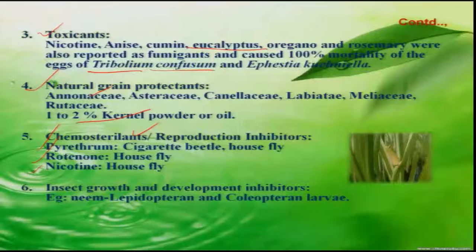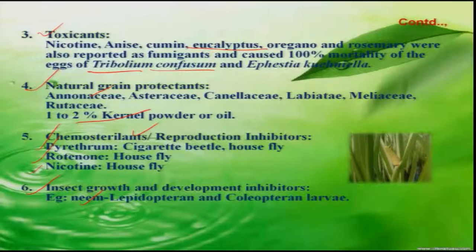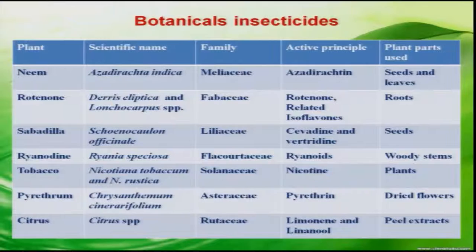The next group is insect growth and development inhibitors. Some botanicals act as insect growth regulators — among them is neem, which affects most lepidopteran and coleopteran larvae. This table shows the different plants with their scientific names, which family they belong to, the principal active component present in that plant, and which part of the plant is used against insect pests.